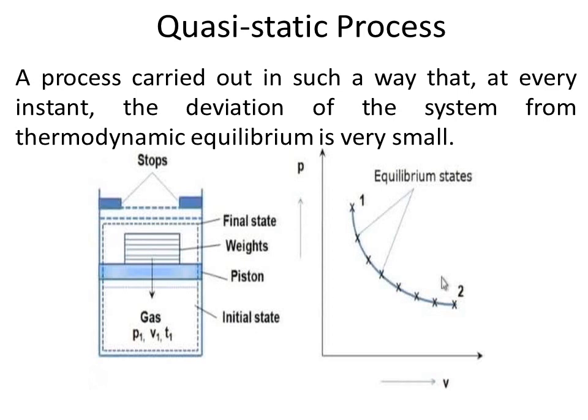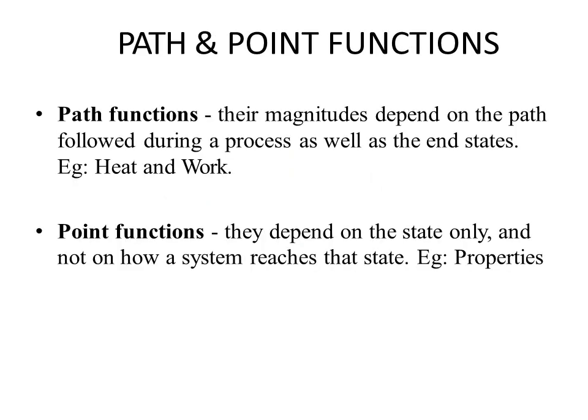In a non-quasi-static process, if the small weights are removed suddenly, the deviation will be abrupt and the states attained at each point will not be equilibrium states — such a process is called a non-quasi-static process.